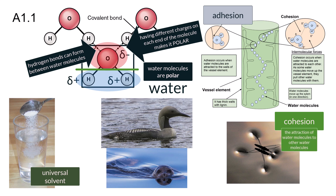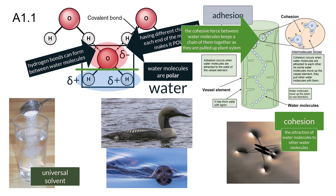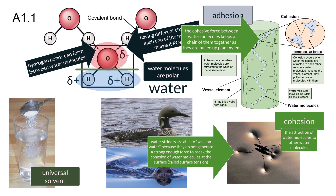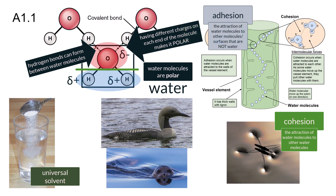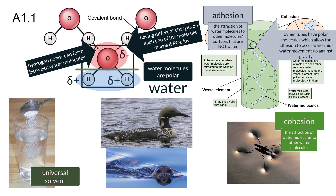Cohesion, the attraction between water molecules, enables the transport of water and nutrients in plants against gravity and allows organisms like water striders to walk on water. Adhesion, the attraction between water molecules and other surfaces, facilitates capillary action in soil and the movement of water within plant xylem.